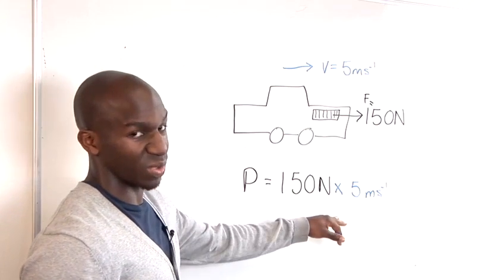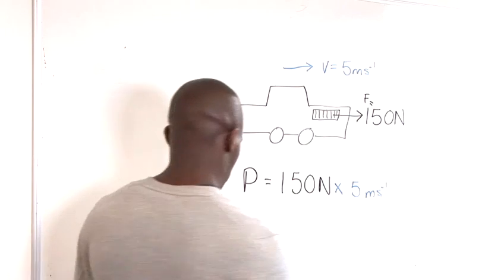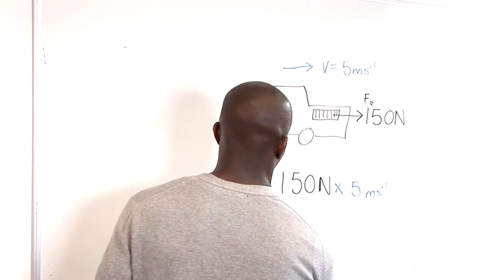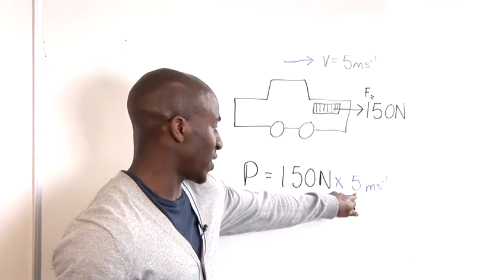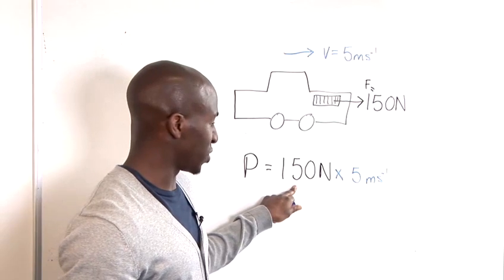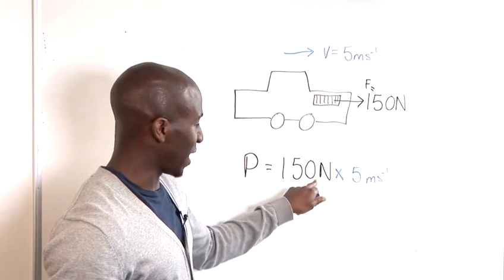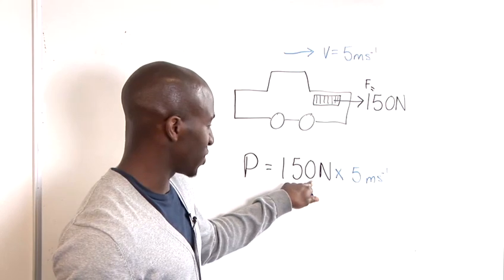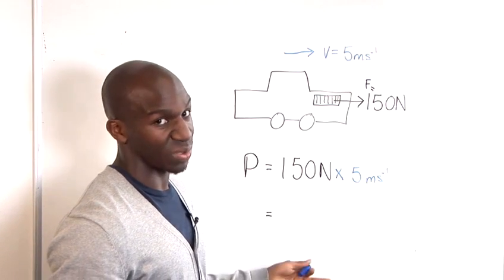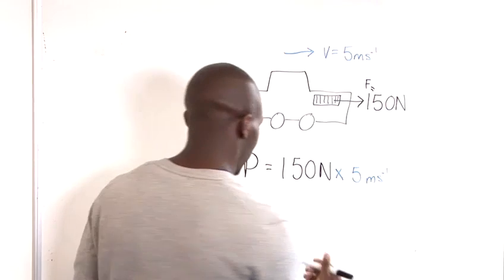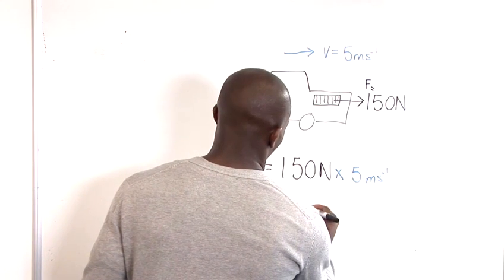Now all we have to do is multiply the two terms together. So the easiest way I would do this is to think about 5 times 15, which is going to be 75. And then you have this 150, so the 10 there, which is marked by the zero. You just multiply the 10 by the 75. And then you get 750 units.